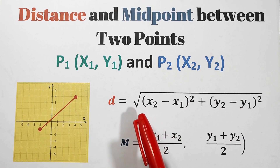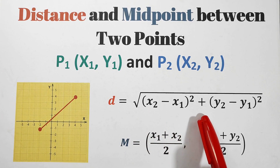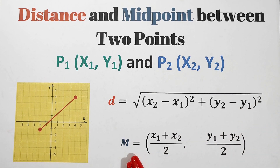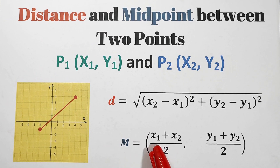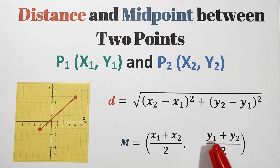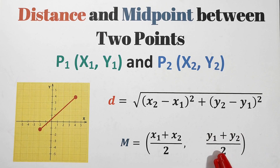That's why we use d is equal to the square root of the quantity x_sub2 minus x_sub1 squared plus the quantity y_sub2 minus y_sub1 squared. And for the midpoint, the formula is M equal to the sum of x coordinates — x_sub1 plus x_sub2 divided by 2 — and the sum of y coordinates — y_sub1 plus y_sub2 divided by 2.